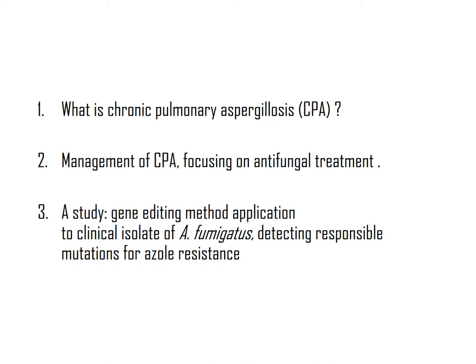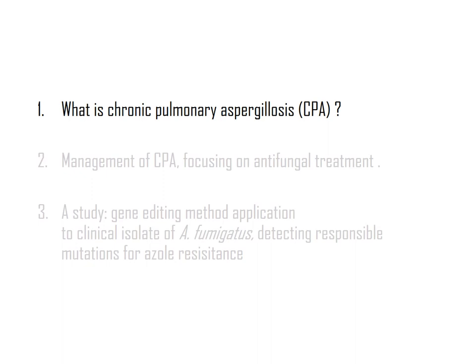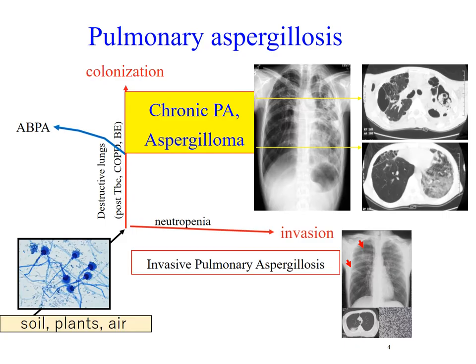First, I want to show what chronic pulmonary aspergillosis looks like. We see roughly three forms of pulmonary aspergillosis: invasive, allergic, and chronic, depending on host backgrounds.